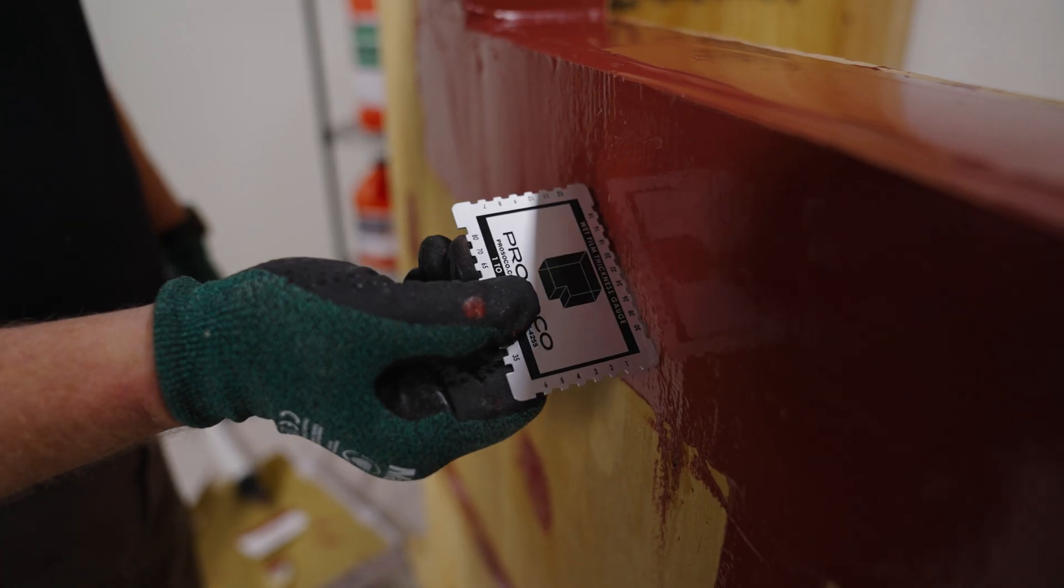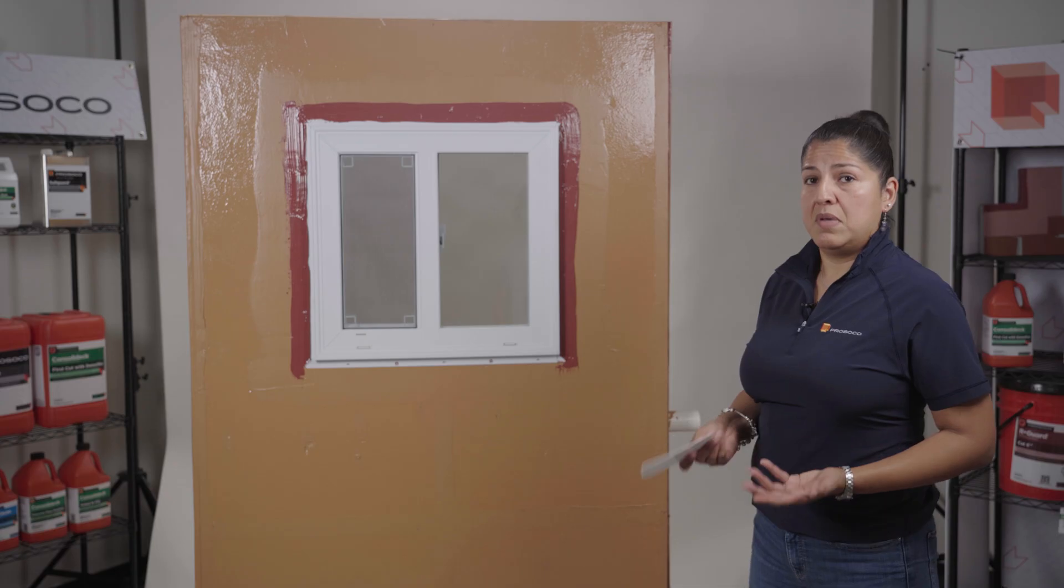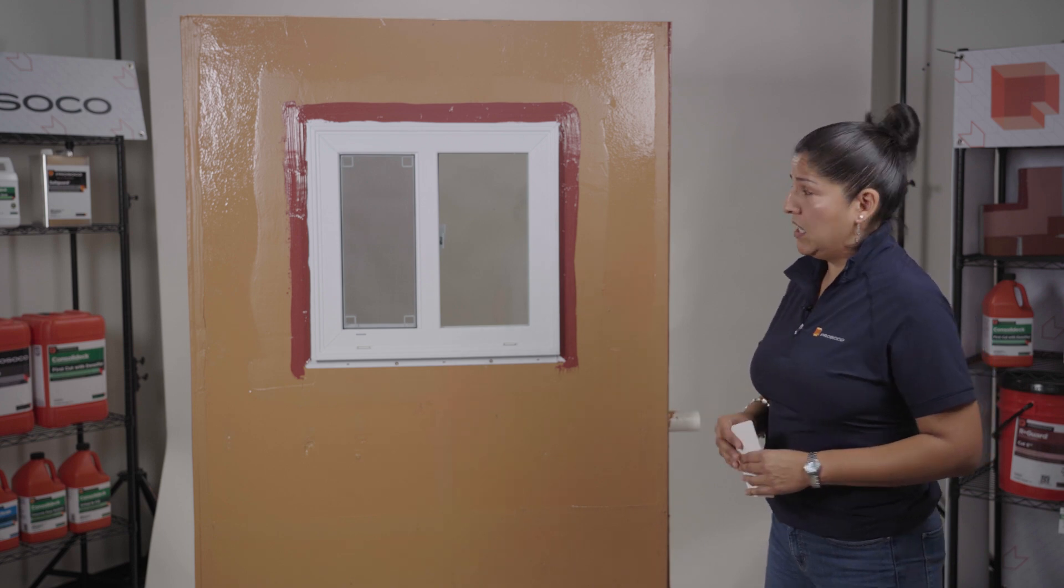Fast Flash is meant to be applied 12 to 15 mil thick. It's a thin mil air barrier system. All of our products are thin mil. You want to use the product in your rough openings. That's our main focus on most buildings.